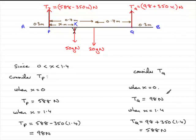And can you see you've got exactly the same range? In a way, we should have known that because of the symmetry of the problem. So basically, the tensions in each rope are going to go from 98 newtons up to 588 newtons.